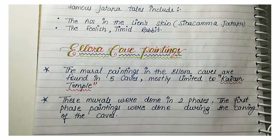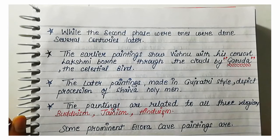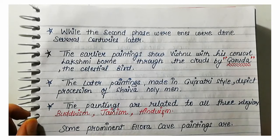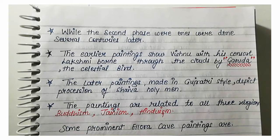The second phase was made many centuries later. The earlier paintings showed Vishnu with his consort Lakshmi, borne through the clouds on Garuda, the celestial bird. The later paintings, made in Gujarati style, depict processions of Shiva and holy men.